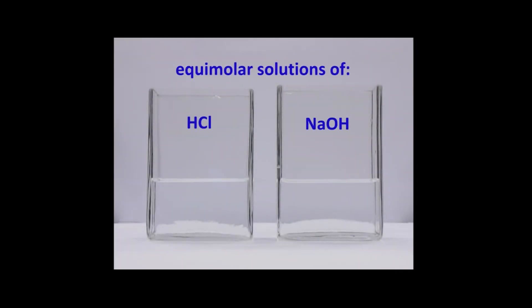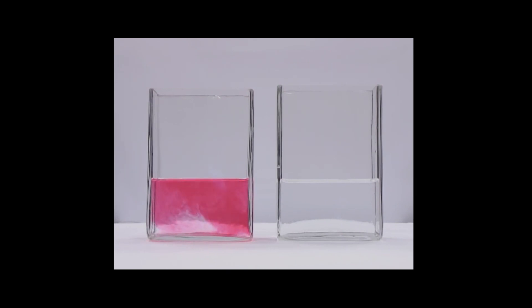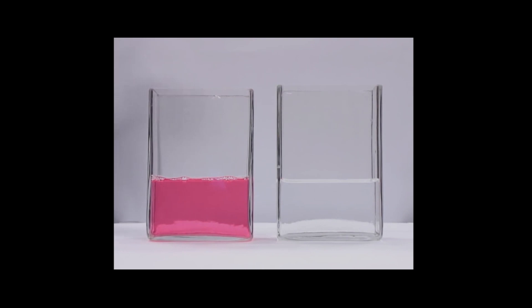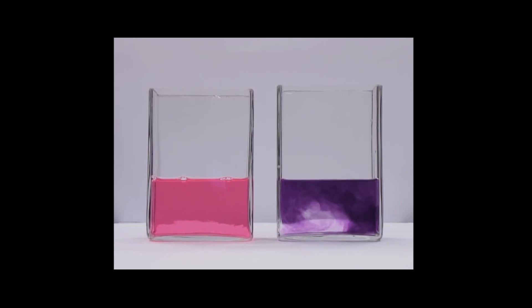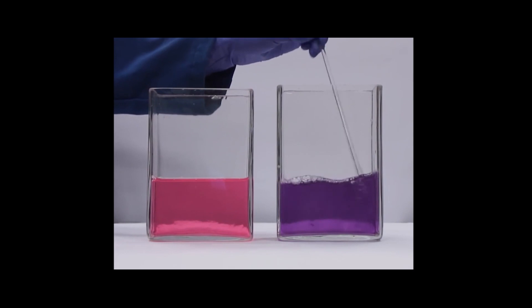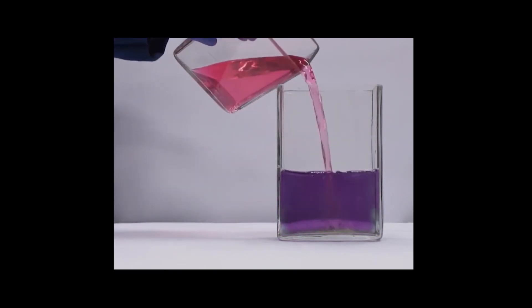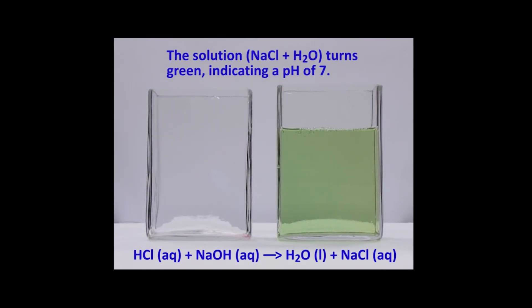Let's watch a video on neutralization reaction. We have hydrochloric acid and sodium hydroxide. Adding universal indicator to the acid turns it red or pink, showing the presence of H⁺ ions. Adding universal indicator to the base turns it purple, showing the presence of OH⁻ ions. When this acid and base are mixed together, the neutralization reaction produces a neutral solution with a green color, showing that the acid and base have neutralized each other to form salt and water.